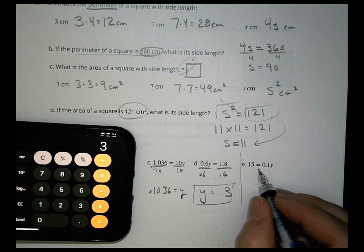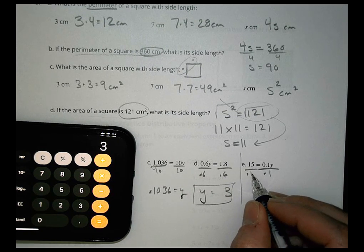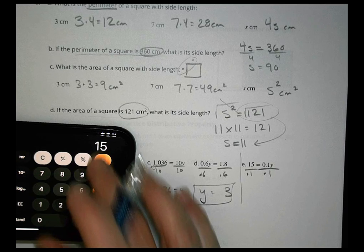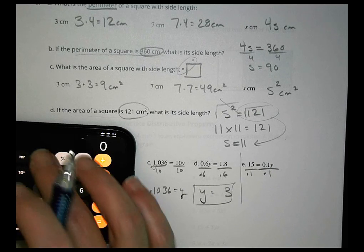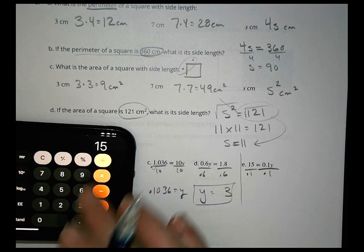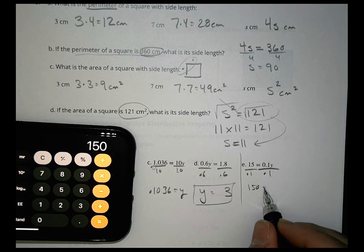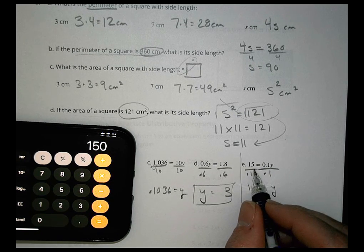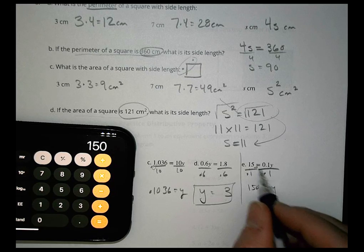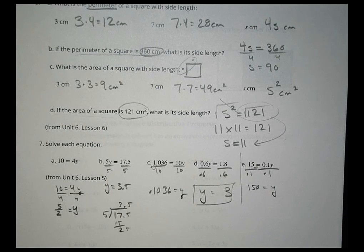Over here, we're going to divide both sides by a tenth. 15 divided by 0.1 equals 150. This one, we divide by a tenth. We're going to move the decimal over that way one more. Alright, that's it for today.